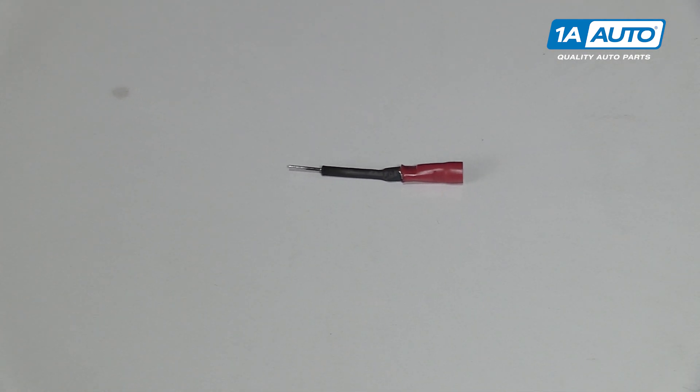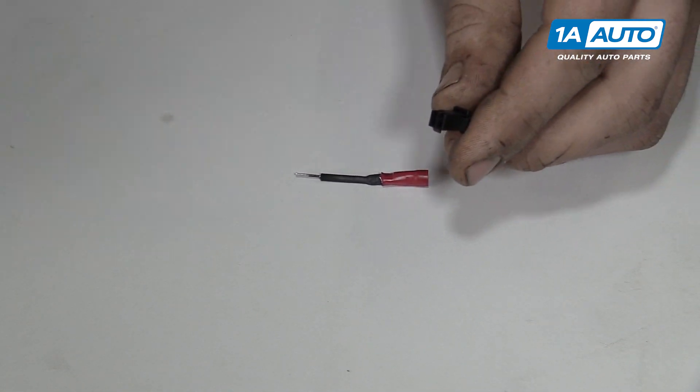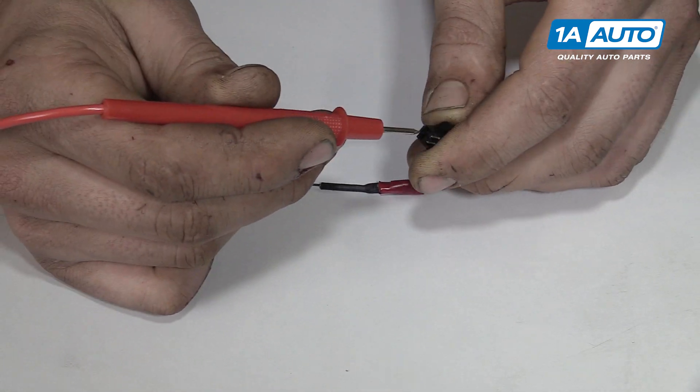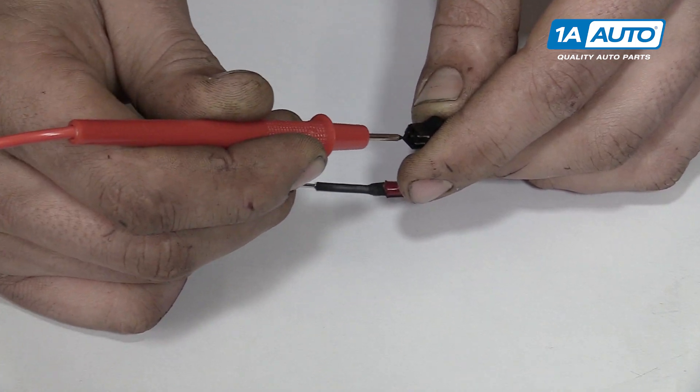What this is for, say you have a little wiring connector like this micro connector here. You need to try to see if there's power and ground coming out of this connector. You take your leads, they don't fit in there.